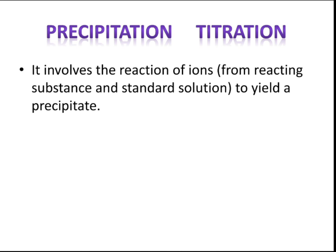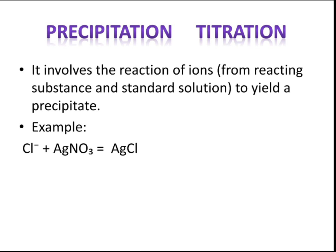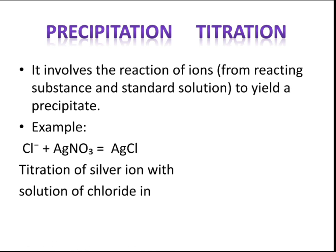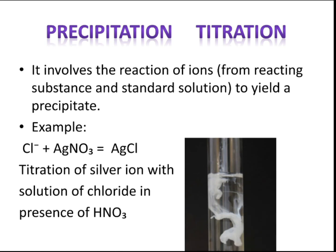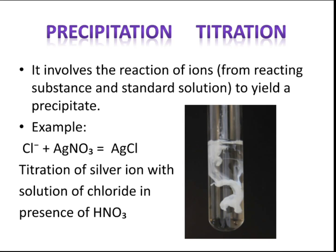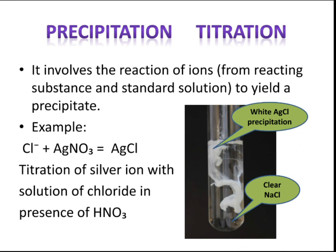Precipitation titration involves the reaction of ions to yield a precipitate. For example, chloride ions combine with silver nitrate to form silver chloride precipitate. The titration of silver ions with a solution of chloride ions occurs in the presence of nitric acid. As seen in the image, a clear sodium chloride solution forms white silver chloride precipitate.